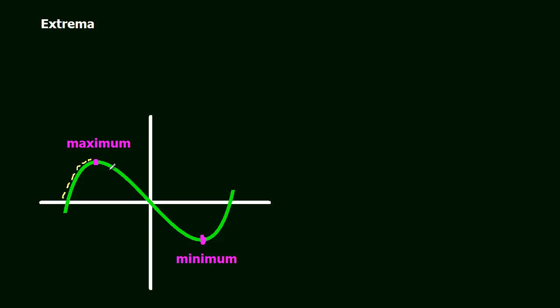Then to the right of the maximum, all the slopes are negative. So coming from the left to the maximum, all those slopes are positive. Then we get to the maximum, and to the right of the maximum, all the slopes are negative.